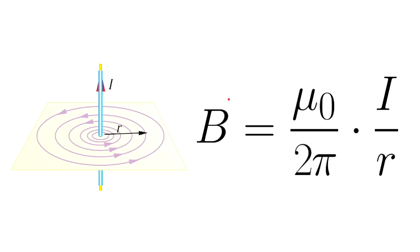And the magnitude of the magnetic field at any point at a distance r from the wire is given by this equation.